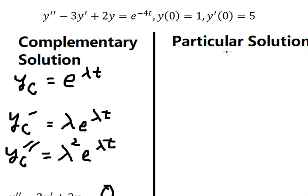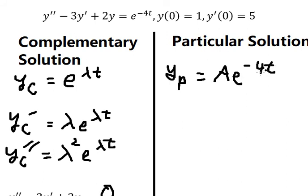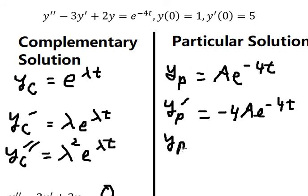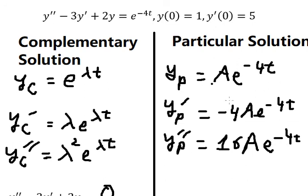Now for the particular solution, since the right-hand side has e^(−4t), I put yp = A·e^(−4t). The first derivative is −4A·e^(−4t), and the second derivative is 16A·e^(−4t). I substitute these into the differential equation.